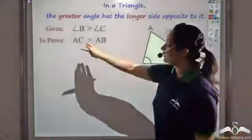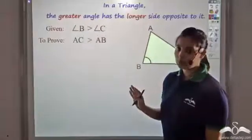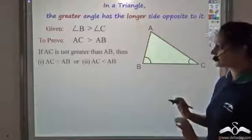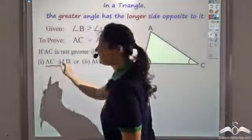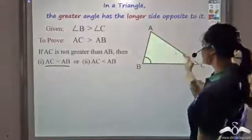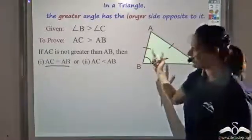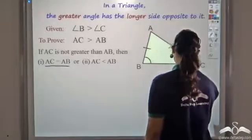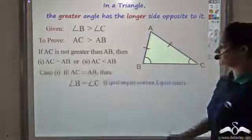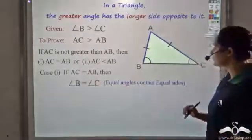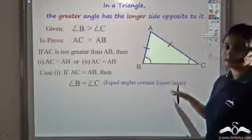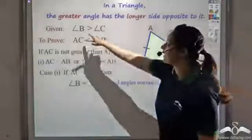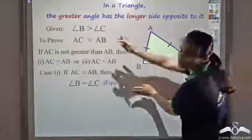Let us first consider the case when AC equals AB. If AC equals AB, then equal sides contain equal angles, so angle B would become equal to angle C. But we are given that angle B is greater than angle C, so this is contrary to what is given. Hence this case is false.